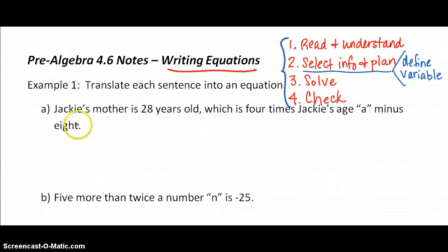So the first sentence says, Jackie's mother is 28 years old, which is 4 times Jackie's age, A. In other words, they want Jackie's age to be represented with an A minus 8.